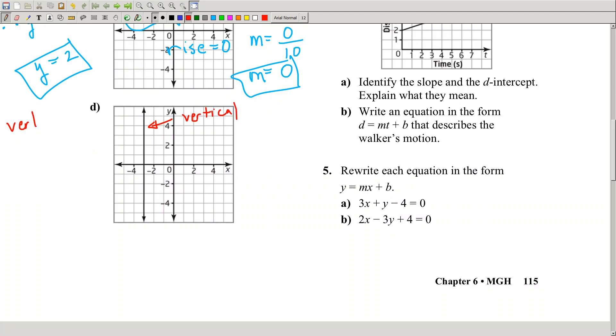A vertical line has a slope that is undefined. Vertical lines have the equation x equals a number, where x is a constant.